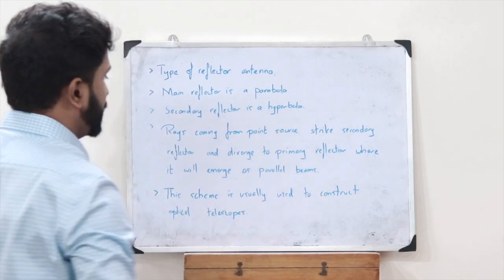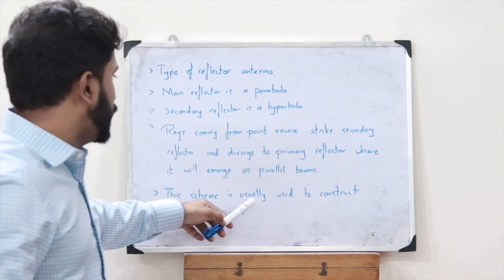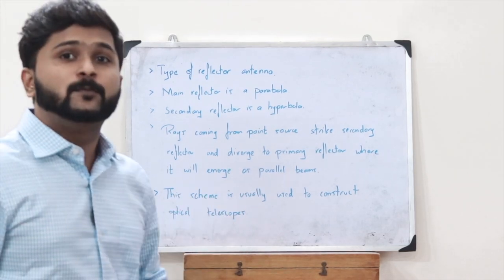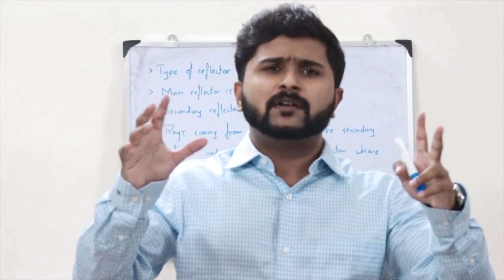This scheme is used to construct optical telescopes. Now you might be wondering why we can't just use a simple parabolic dish antenna. Let's see the advantages of using this kind of antenna.